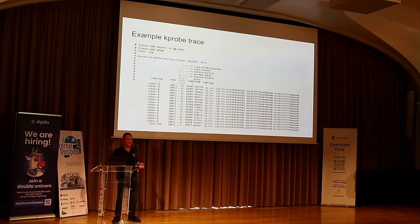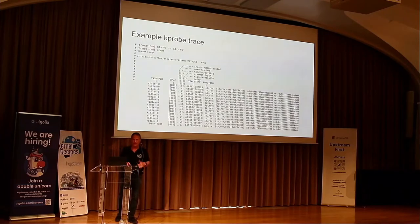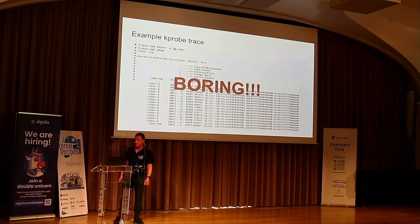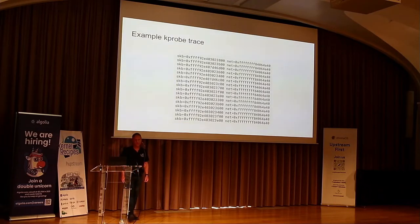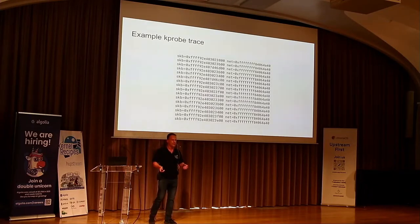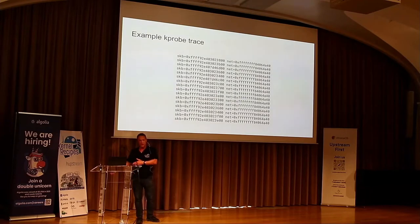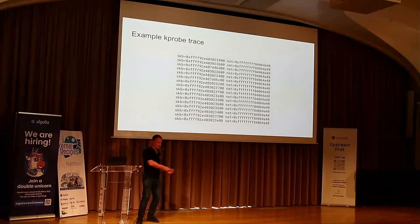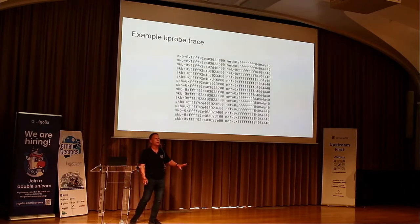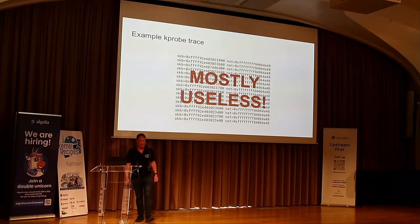When I ran it, I said trace command start with -e ipc_receive, which is the event I just created. And there I got argument one and argument two. This is useful — if you can get into the tracefs directory, you've basically circumvented all the security on the machine, because the tracing directory is made to see what's going on inside the kernel. That's why it's admin only — only privileged users have access to tracefs by default, but you can change the permissions if you want.